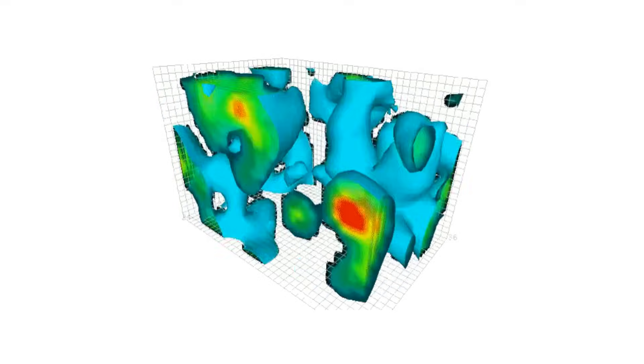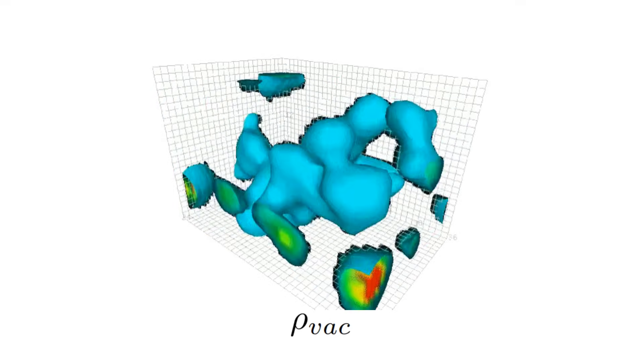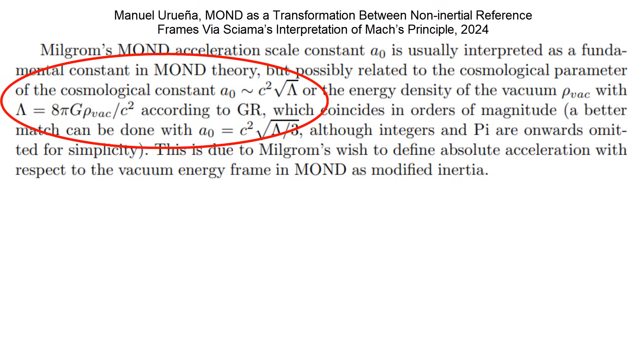Milgrom tried to define absolute acceleration as acceleration with respect to the vacuum in his formulation of MOND. So, in MOND you need to define your acceleration with your absolute acceleration. So, where is the frame that will provide this? So, I thought maybe it's the vacuum. Okay? The quantum vacuum. And that is why he usually relates his acceleration scale constant with the cosmological constant, that is, with the energy density of the vacuum.